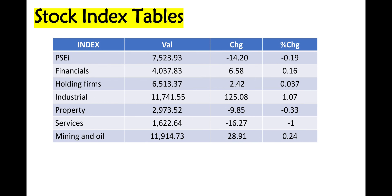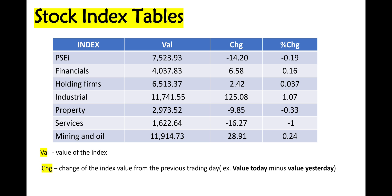We have here an example of a stock index table, wherein we have a column for the index, the column for the value of the index, the change of the index, and the ratio of change to value. For example, industrial here has the highest change of index, which is 125.08, wherein the ratio of change to value is 1.07. The next is mining and oil, with a change of index value of 28.91 and a ratio of change to value of 0.24. The lowest change of index value here is services, which is negative 16.27, with a ratio of change to value of negative 1.